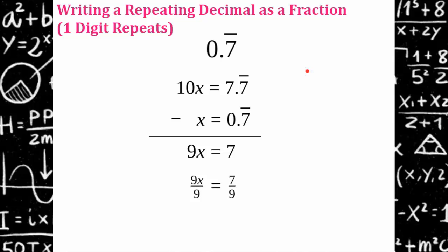Divide both sides by 9. In this case it's in simplest form. So now I'm left with x equals 7 9ths. So 0.7 repeating is equivalent to 7 9ths. Go ahead and check that on your calculator. 7 divided by 9. Pretty magical.